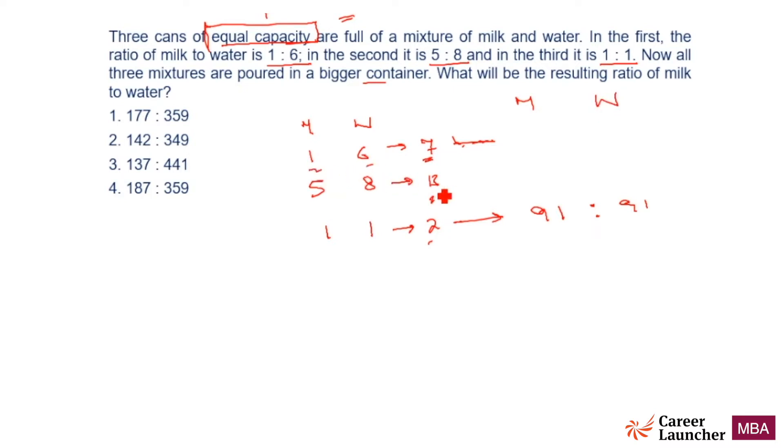This is going to be equal. This is 13. To make it 182, to make this 182 what will you do? 13 to be multiplied with 7 and 2, which is 14. So 13 into 14 is equal to 182.